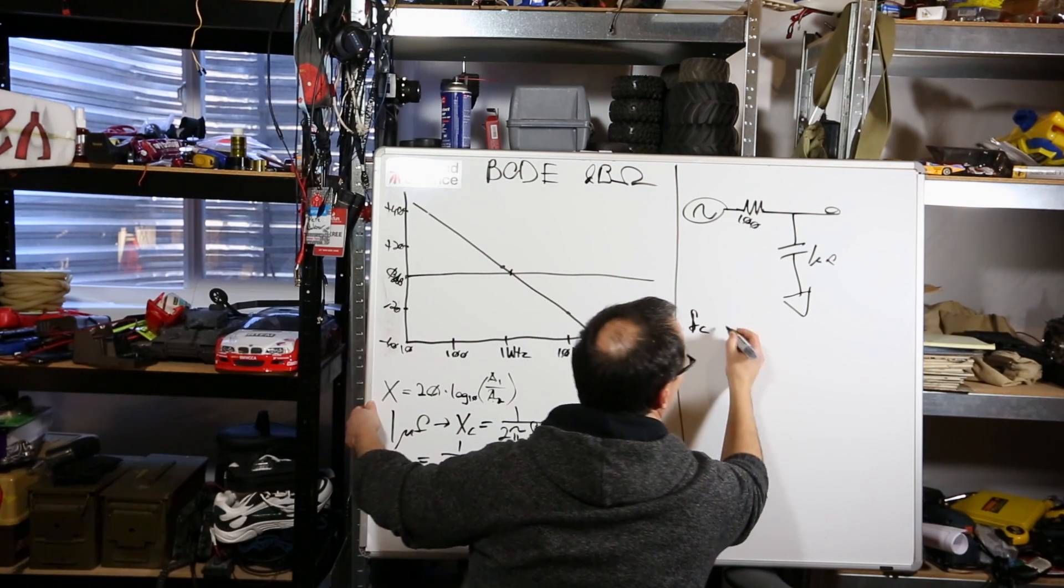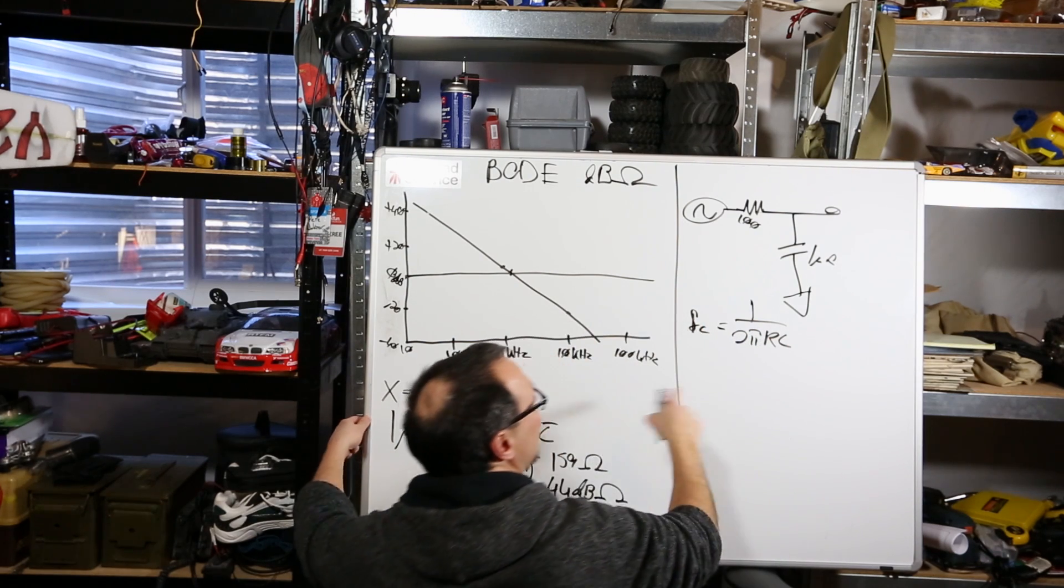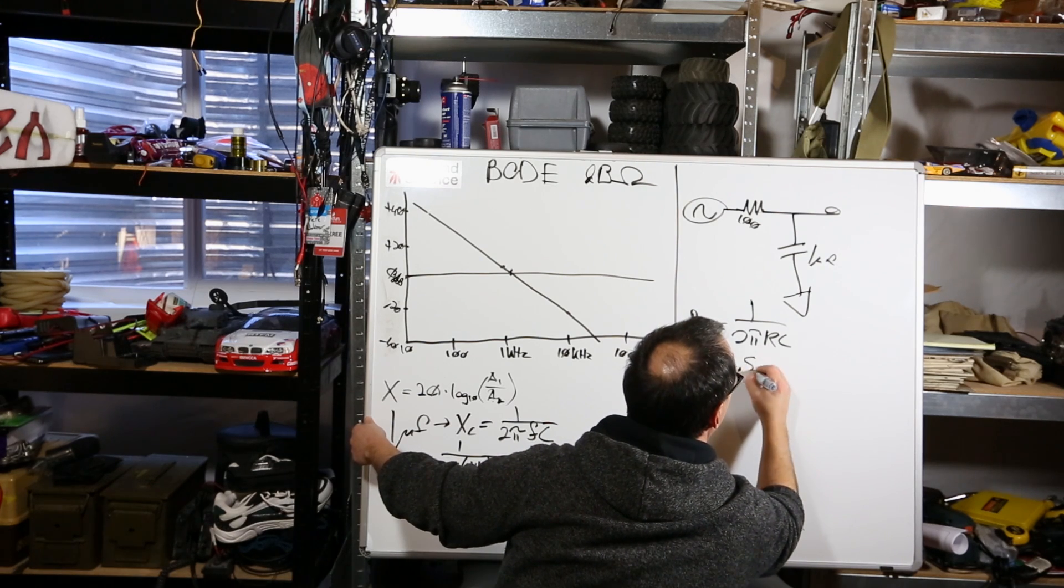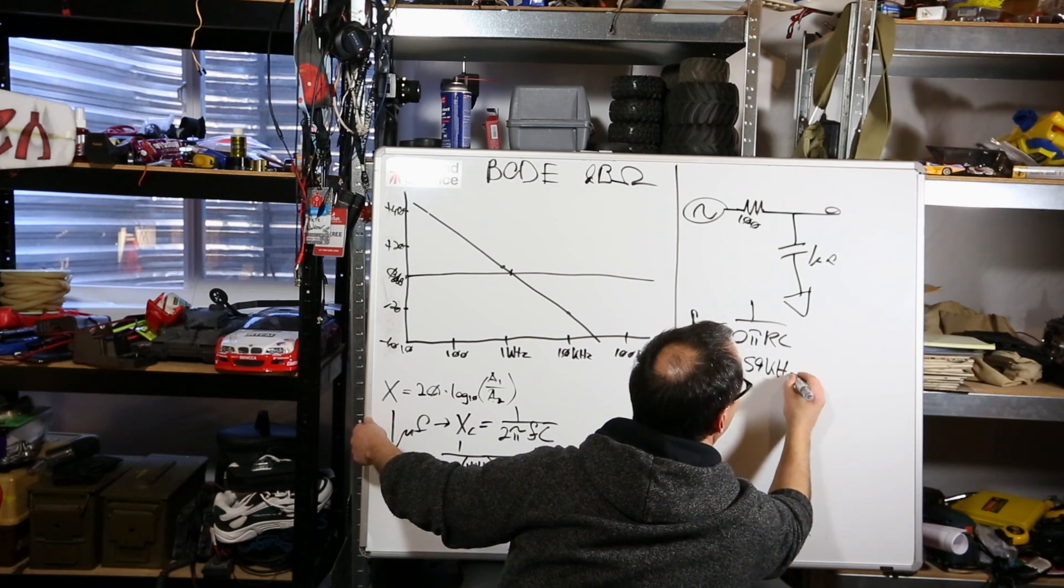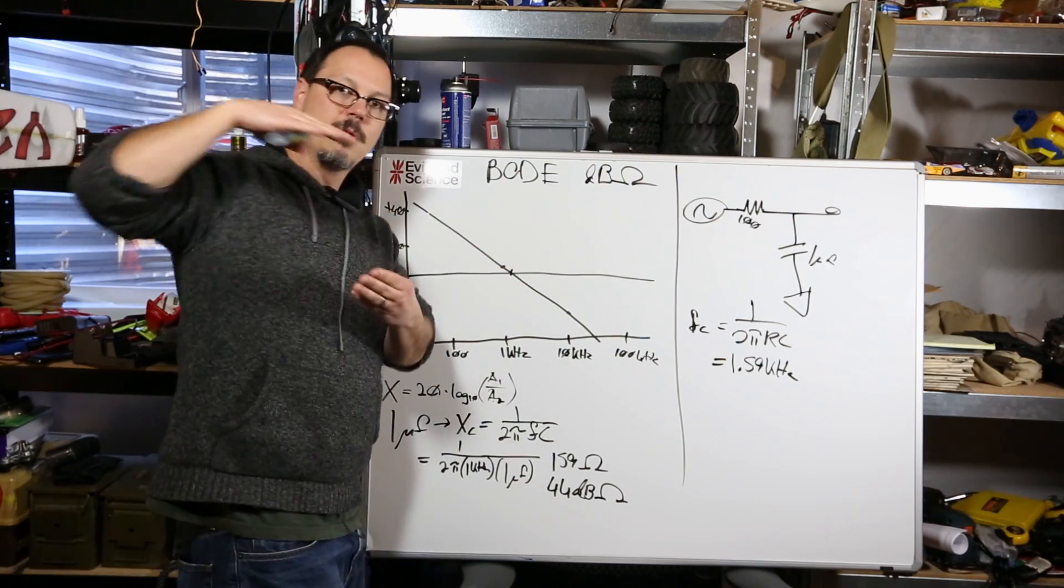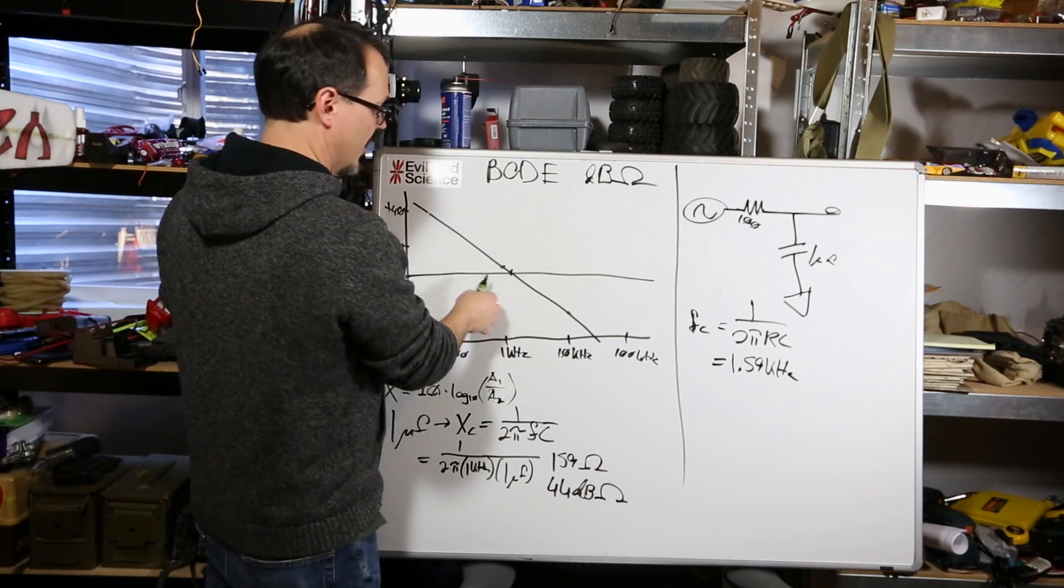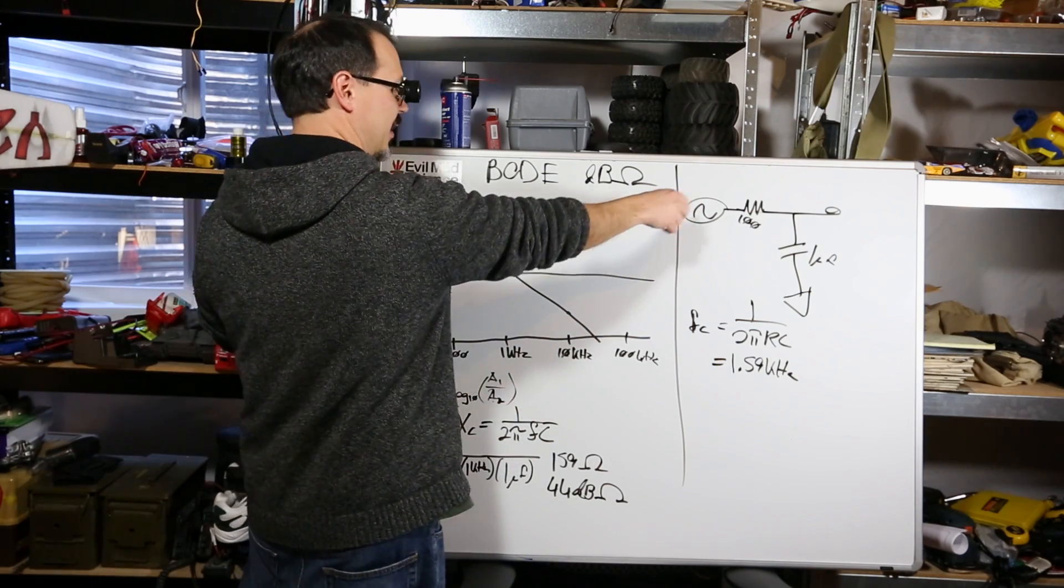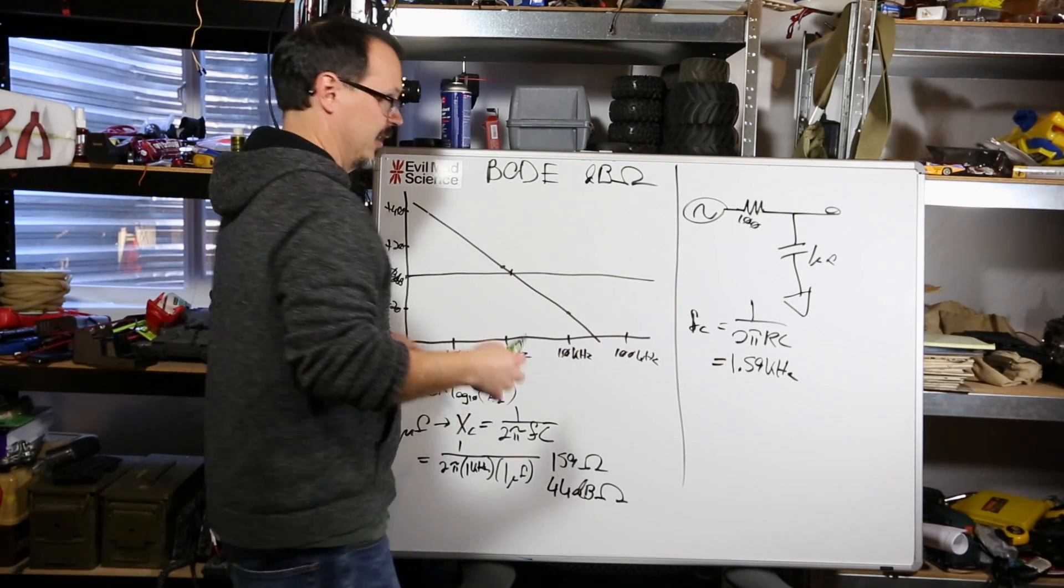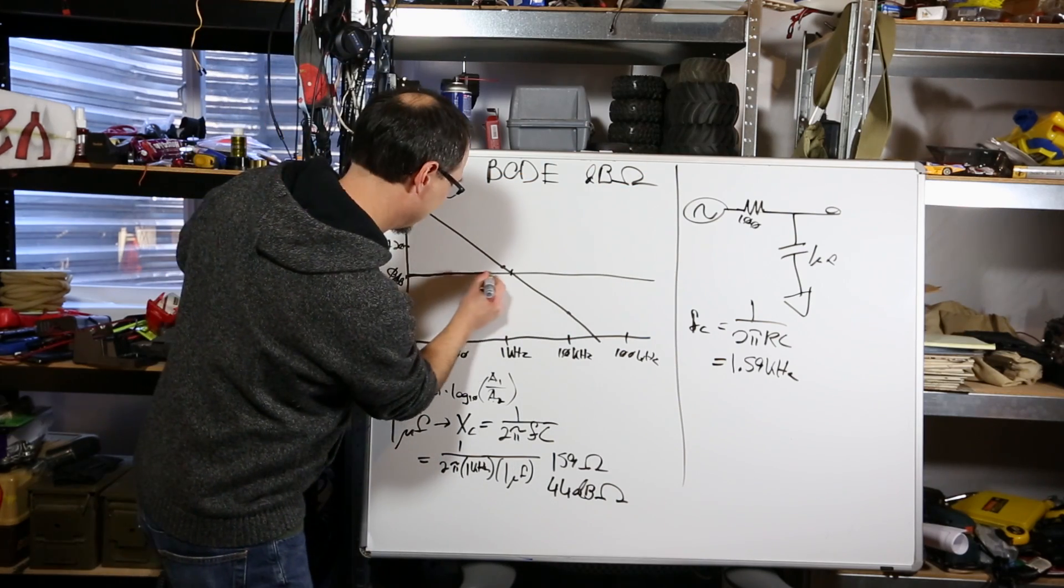What's that frequency? F sub C, which is for cutoff, equals 1 over 2 pi R C. And in this case, we've got 100 ohms and 1 microfarad. It will come out to be 1.59 kilohertz. Once it gets to 1.59 kilohertz, the signal is going to start to go down at a rate of 20 dB per decade. So if you go up to, if this is like 1 volt peak to peak at this, if you go up in order of magnitude, it'll be 0.1 volt peak to peak.